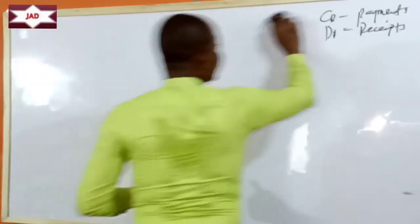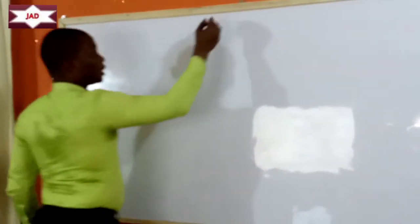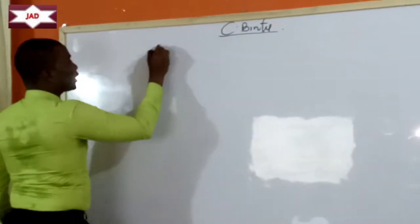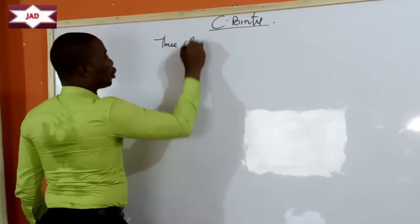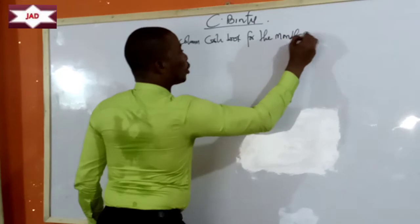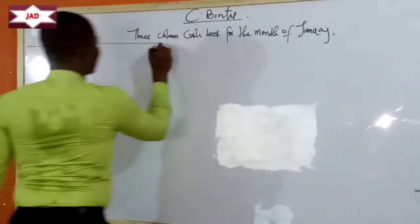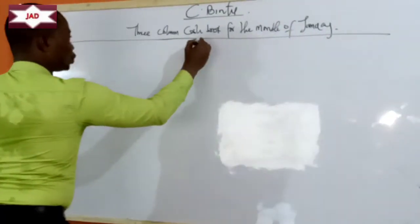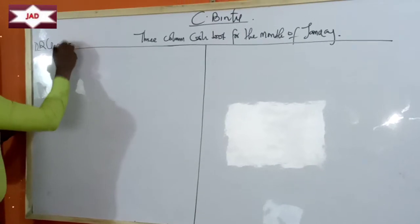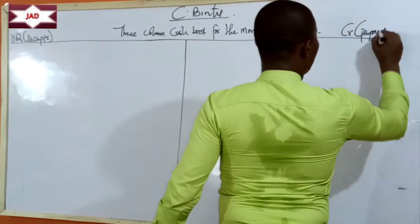Let's quickly solve the question. The name of the business is CBintu — I guess a sole trader or one-man business. So we're preparing the three-column cash book for the month of January. We can have it this way using the traditional method. We have here on the left the debit side, which is for receipts, and here on the right the credit side, which is for payments.